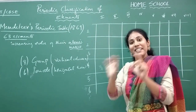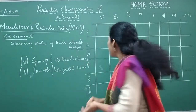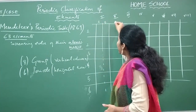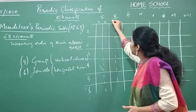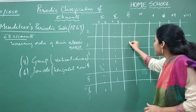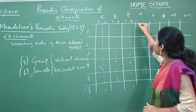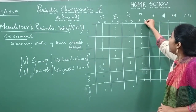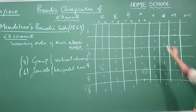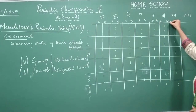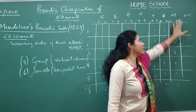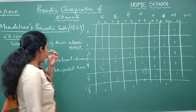Each and every group is again subdivided into A and B subgroups. Group one is split into 1A and 1B, group two into 2A and 2B, and so on. Every group from one to seven has been split into A and B. Group eight, however, was not divided into subgroups — it remains as one single group.